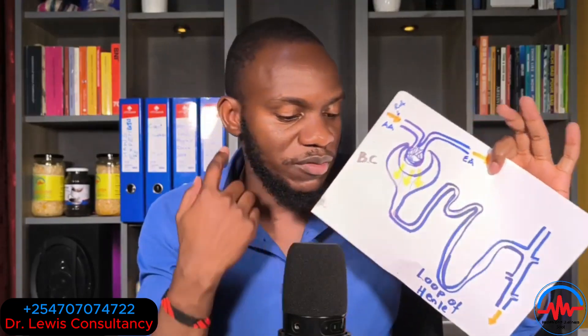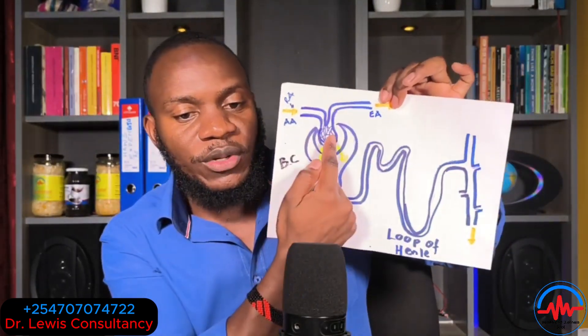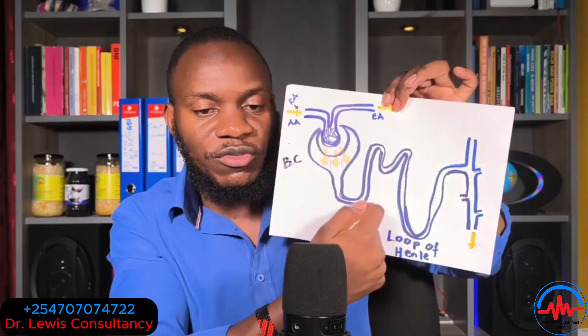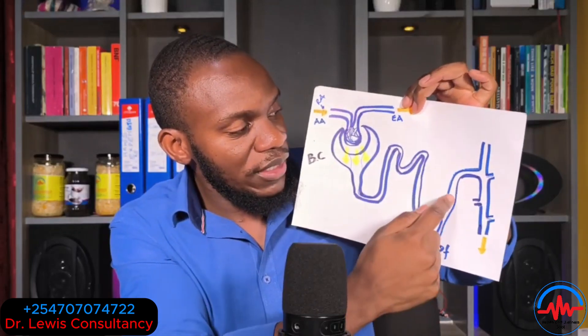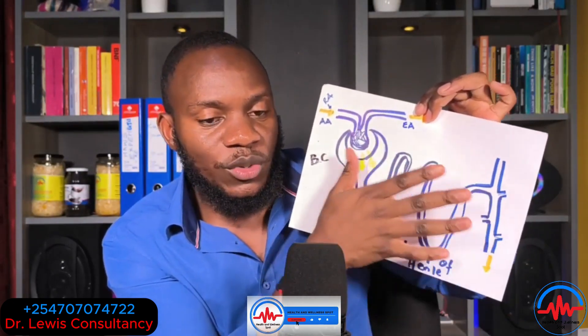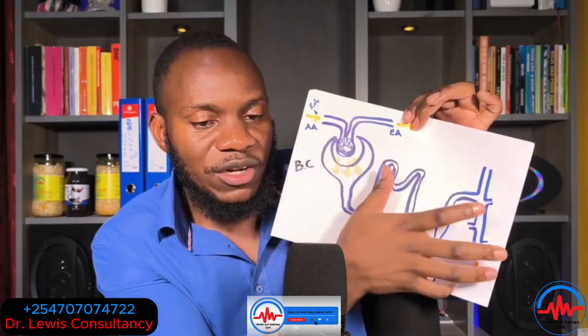Salt filtration is the normal function of the kidneys. Reviewing the nephron structure: the glomerulus sits inside the Bowman's capsule, followed by the proximal convoluted tubule, the loop of Henle, the distal convoluted tubule, and then the collecting duct. Once you understand that, you understand the structure of the kidney cell. The diagram is shown intentionally to take us to the Bowman's capsule, where filtration happens.